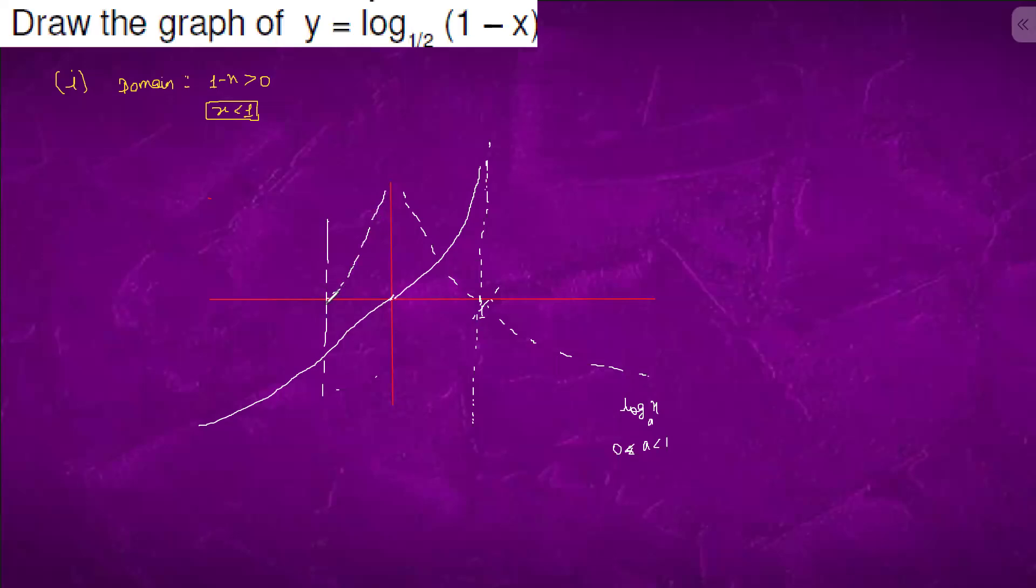This will be negative of log ln x. So this is log minus x base a, where a is between 1 to 0. And when we will do plus 1, it will shift by 1 this side. So this is log 1 minus x base a, when a is between 1 to 0.